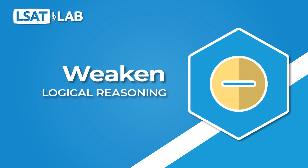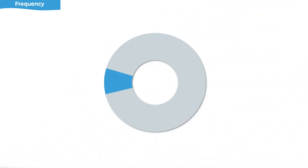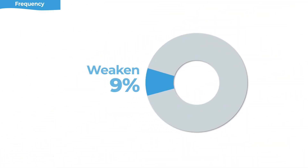Hi, this is Matt at OSAT Lab, and today's lesson is on weakened questions in the logical reasoning section. Weakened questions are a fairly common question type — 9% of all logical reasoning questions are weakened questions. Any improvement you make here will also pay off when you're dealing with strengthened and paradox questions as well. So the skills in this lesson are really important, not just for this question type, but for a few question types that all have very similar lines of reasoning.